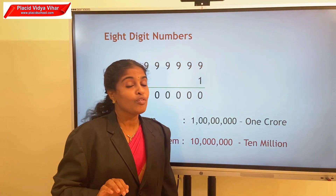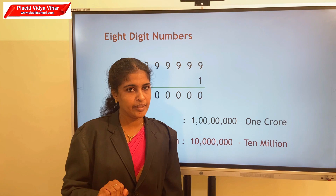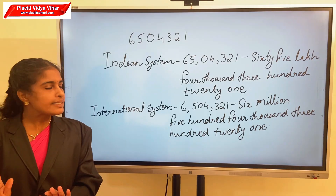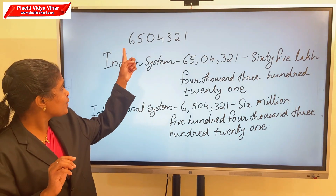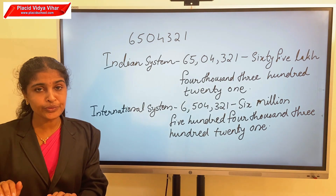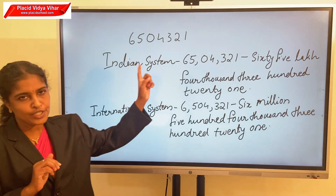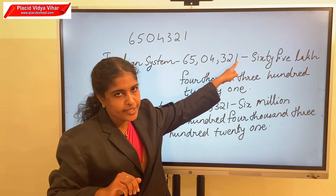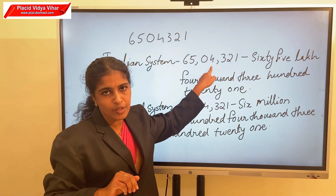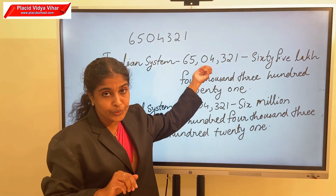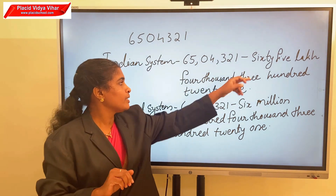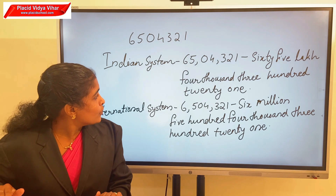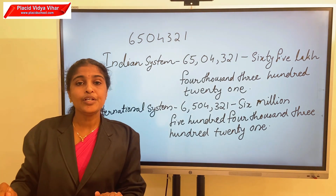Thus, we can say that one crore is equal to ten million. Now, I will give you a number — can you write it in the Indian system and international system? Consider the 7-digit number with digits 6, 5, 0, 4, 3, 2, 1. In the Indian system, first we put commas: first three digits (ones, tens, hundreds), then two digits, then two digits. So this number can be written as 65,04,321.